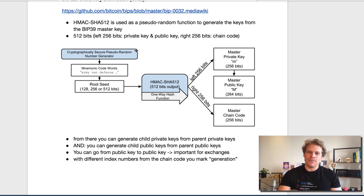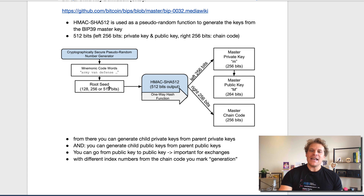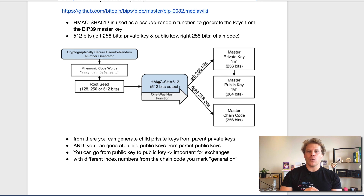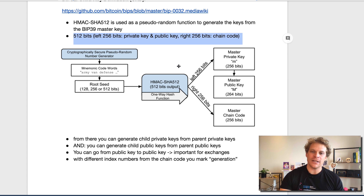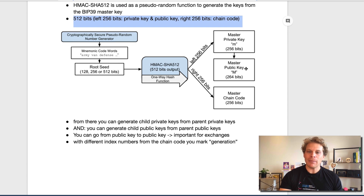So we have this pseudorandom number generator basically to generate the mnemonic words. Then you get your seed — let's say 512 bits. And now we have this special function. So all this here is so far BIP39. Here we get to BIP32, and now we have this function where we split the 512 bits into a left and into a right part. From the left part we basically get the master private key out, and from that always the master public key. And then we have a chain code.